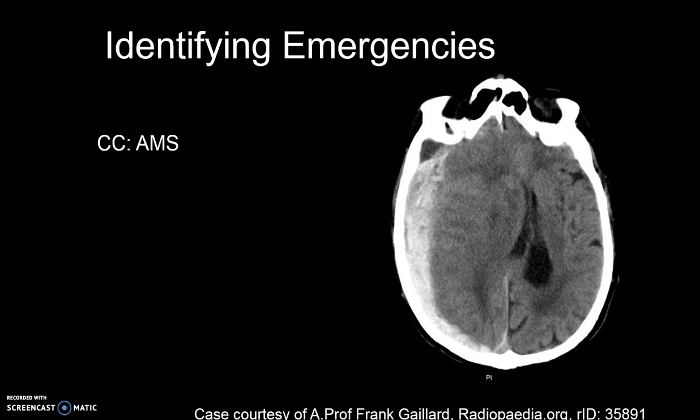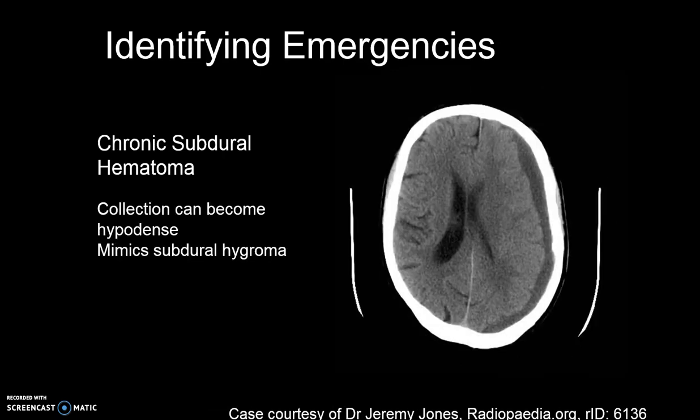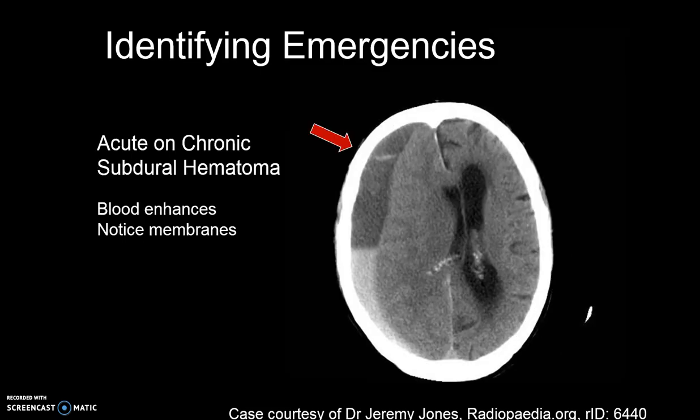When ruling out neurological emergencies, CTs of the head are necessary. This patient presented to the ER with altered mental status. The hyperdense outline indicates new blood in a subdural hematoma. The hypodensity indicates old blood in a chronic subdural hematoma. A chronic subdural hematoma mimics the look of a subdural hygroma, which is actually a collection of sub-CSF. In the subdural space, we see a variety of densities; the different densities indicate time differences and age the subdural hematoma.